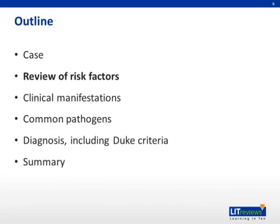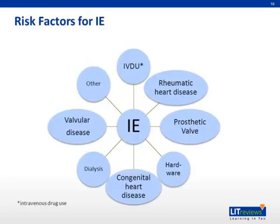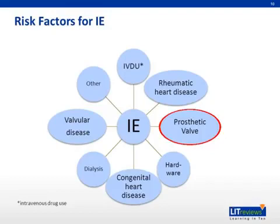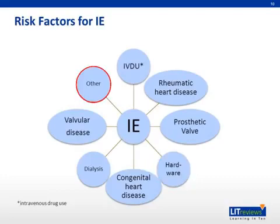Now we will move on to risk factors for the development of infective endocarditis. There are many different risk factors. Having a non-native or damaged valve puts a patient at substantial risk. Therefore, patients with valvular disease, congenital or rheumatic heart disease, and those with prosthetic valves are considered to be at risk. Those who are more likely to become bacteremic are also at risk, including IV drug users and those on dialysis or who have indwelling hardware. Other categories include pregnant women or patients who have shunts for management of ascites or hydrocephalus. HIV may also be an independent risk factor.